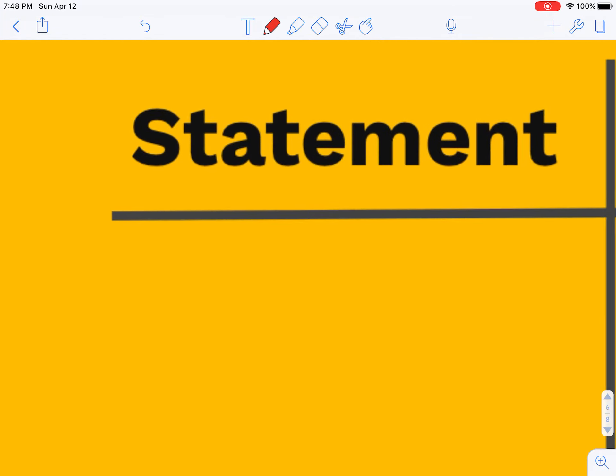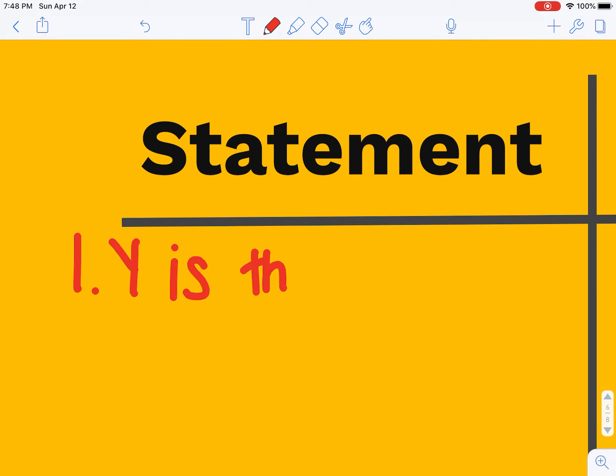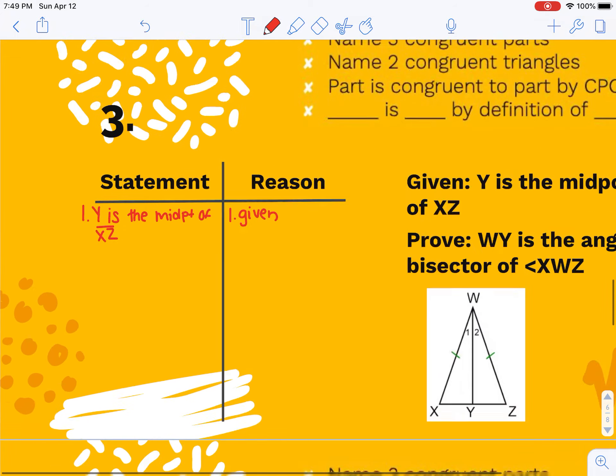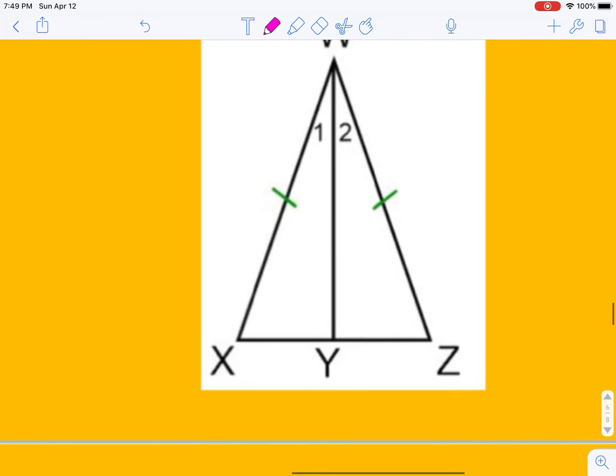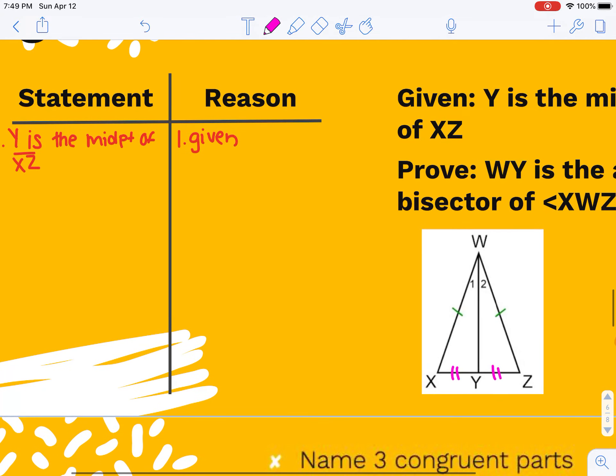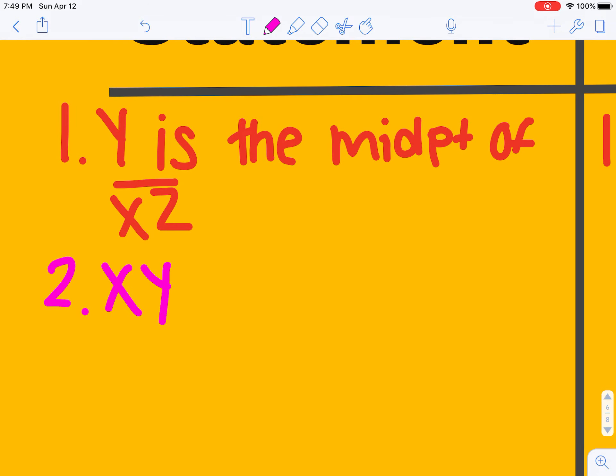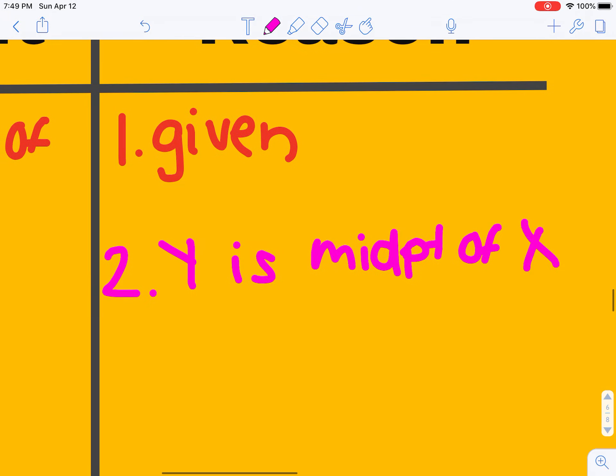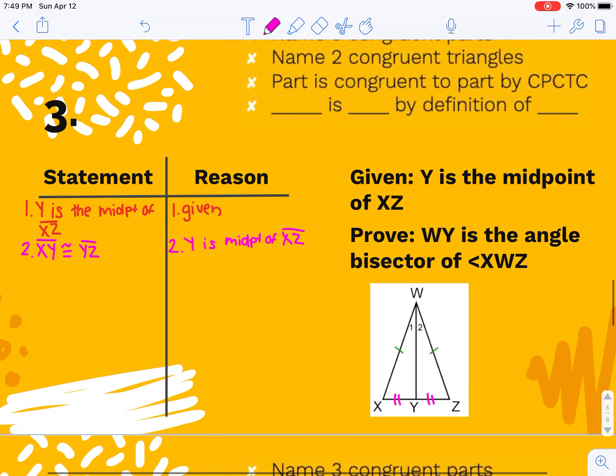So I'm given Y as the midpoint of XZ. Even if I'm not sure how I'm going to use it, I'm going to write it down. And that was given. Because Y is the midpoint, I know that these two will be congruent. So my very next line can be XY is congruent to YZ. And my reason can be Y is midpoint or definition of midpoint. Notice to use it as a reason over here, it had to be a statement first. I can't jump straight to step two. I have to write out that it was given to me.